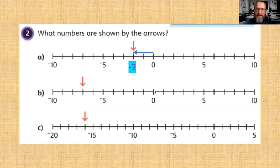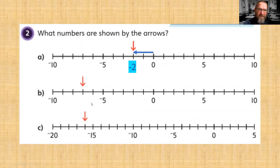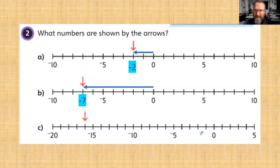Are the steps the same on the next number line? One, two, three, four, five — yes, steps are the same. Counting back: one, two, three, four, five — minus five, minus six, minus seven. So we count all the way back to minus seven.